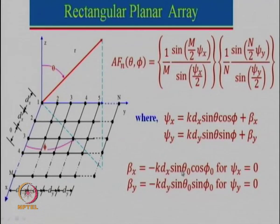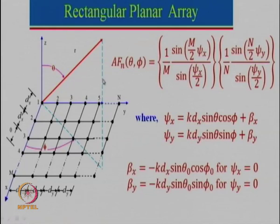For example, if we want the beam maxima at θ_0 = 10 degrees and φ_0 = 20 degrees, we set those angles in the expressions. If θ_0 = φ_0 = 0 that would be broadside. As a practice problem: find the phase shift β_x and β_y for θ_0 = 10 degrees and φ_0 = 20 degrees, with spacing lambda by 2 in both directions. We will continue from here in the next lecture.